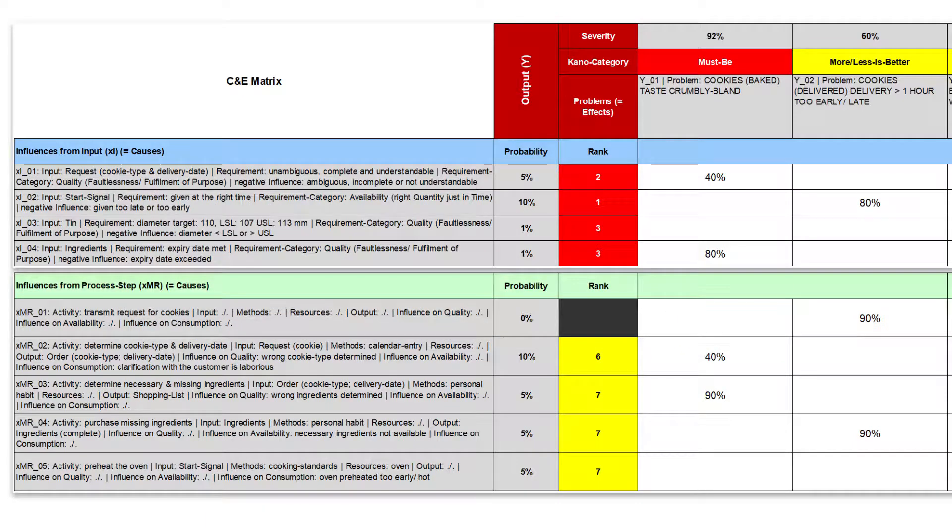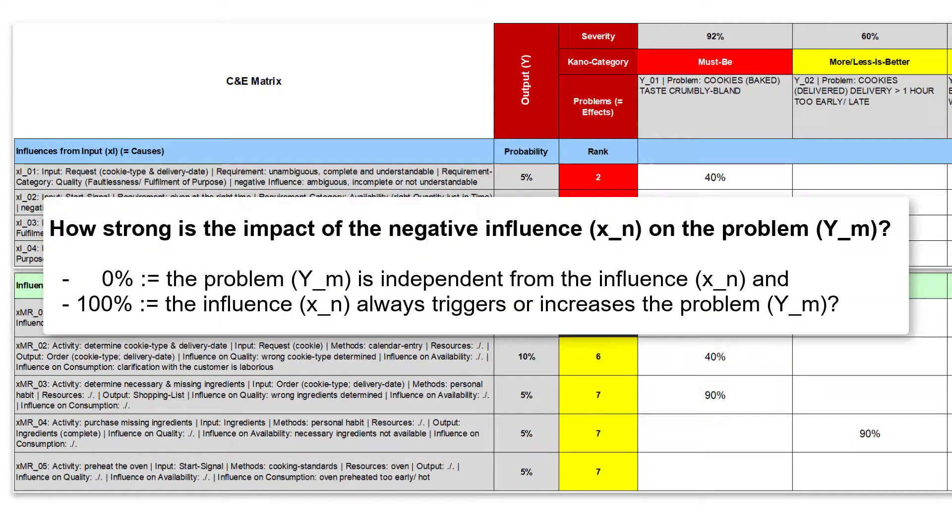In any case, your question to the experts can be, how strong is the impact of the negative influence on the problem, with 0% meaning that the problem is independent from the influence, or 100% meaning that the influence always triggers or increases the problem.